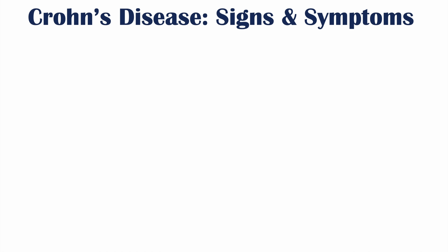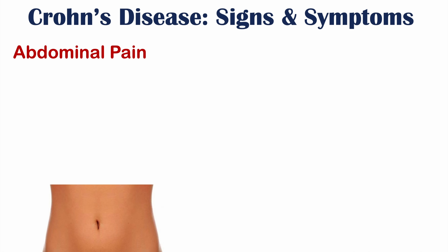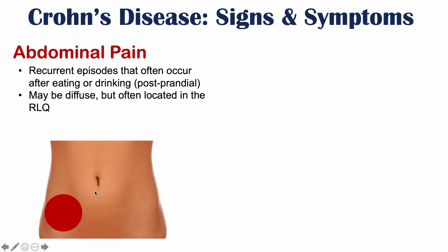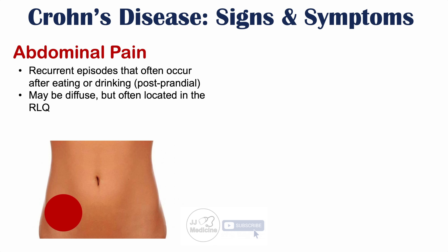The first sign and symptom of Crohn's disease is abdominal pain. There are recurrent episodes of abdominal pain that often occur after eating or drinking — referred to as postprandial. The abdominal pain may be diffuse, but it's often located in the right lower quadrant, where the ileum meets the large intestine at the terminal ileum. This is a very common area where Crohn's disease affects, and the pain is described as cramping.